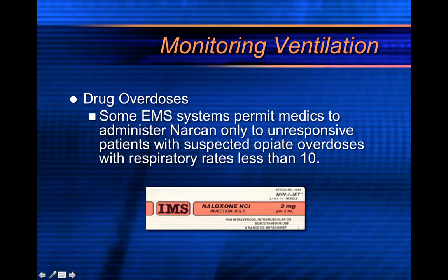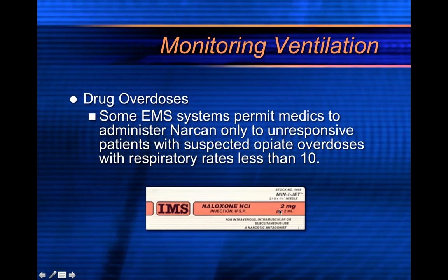For drug overdoses, many EMS systems permit medics to administer Narcan to unresponsive patients with suspected opiate overdose and a respiratory rate less than 10. Narcan is given only to improve respiratory rate. If the patient is already intubated, don't give Narcan — you're already controlling the rate. If not intubated, push it slowly with the IV wide open, just until you get an improvement in ventilatory rate — not a full arousal, because they don't wake up happy.